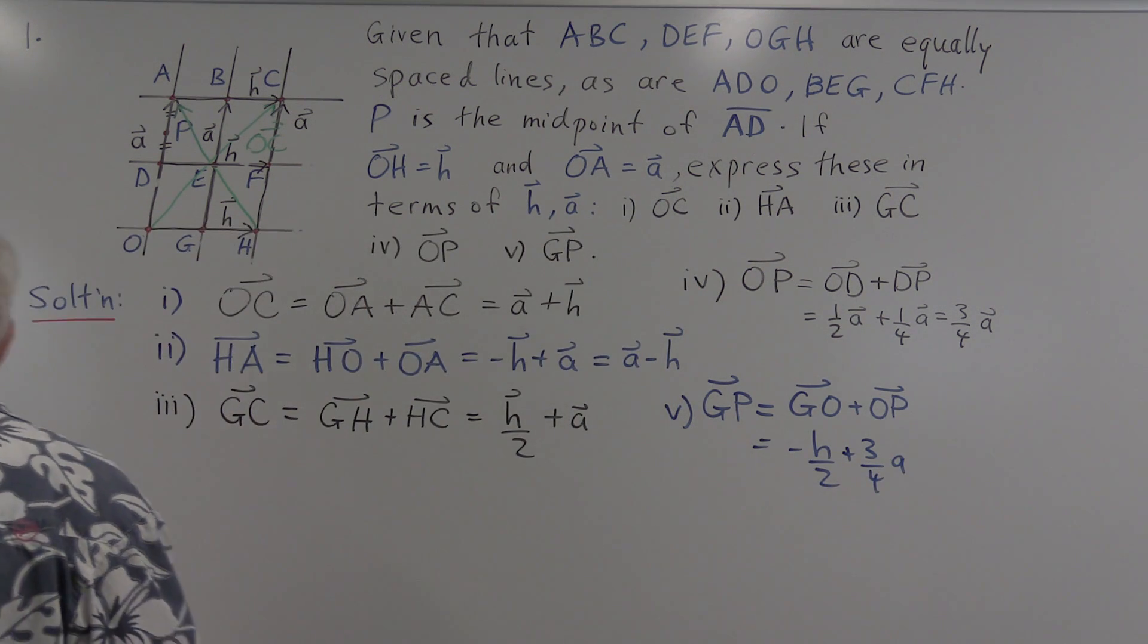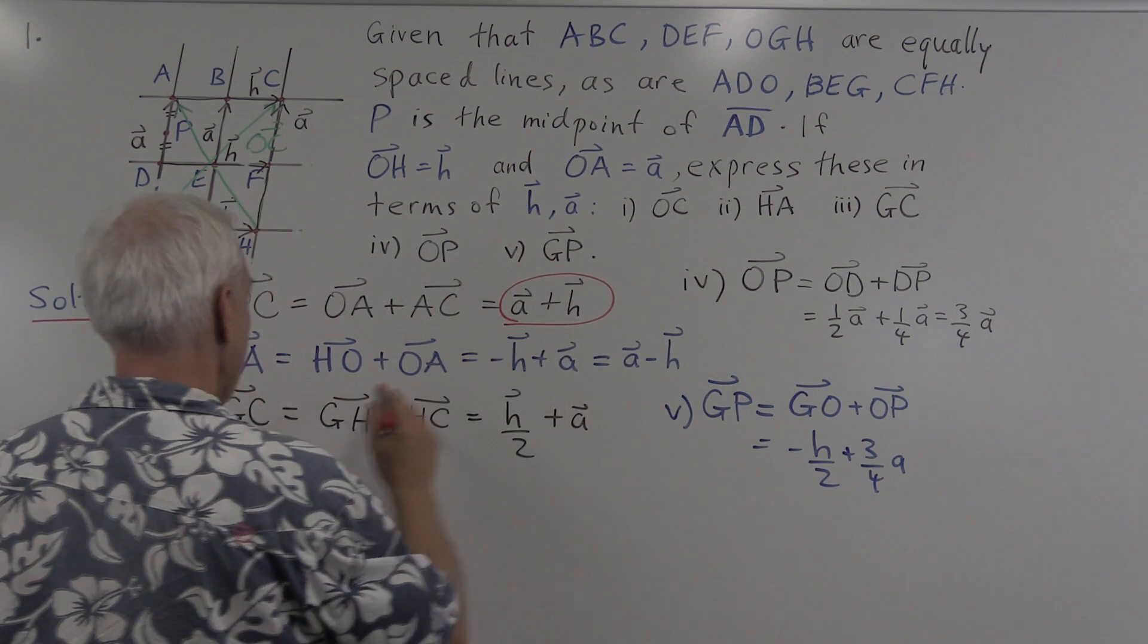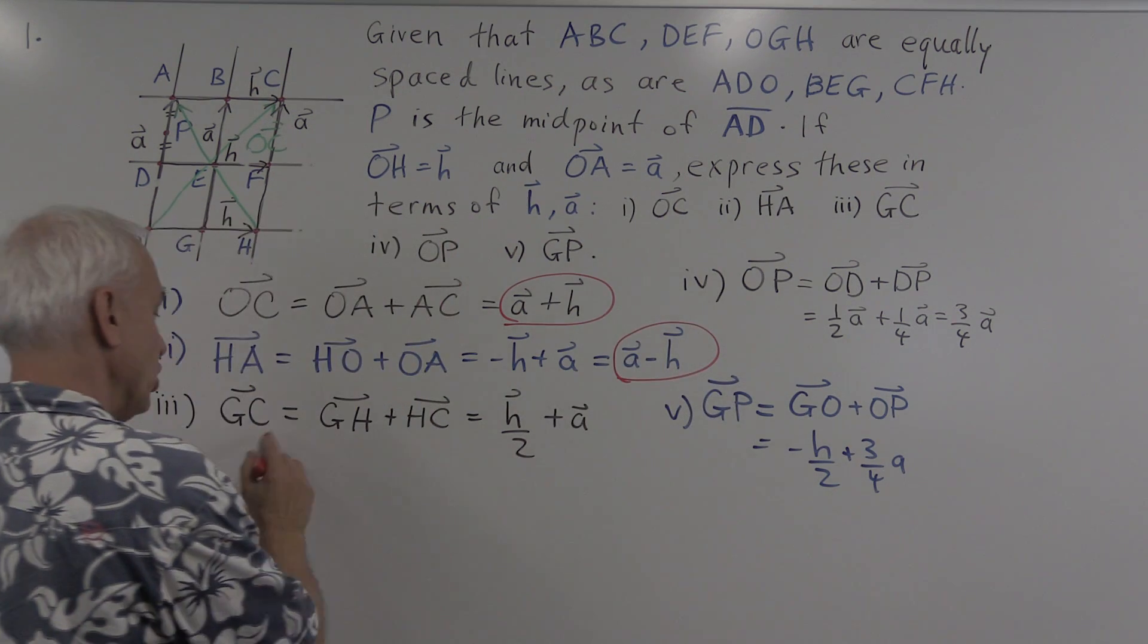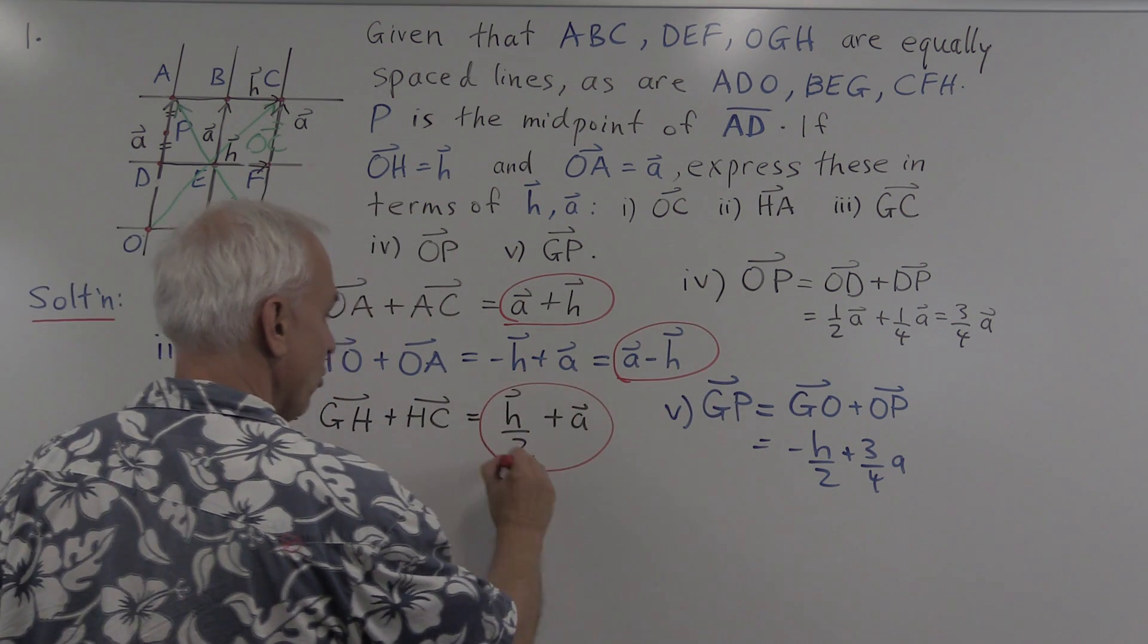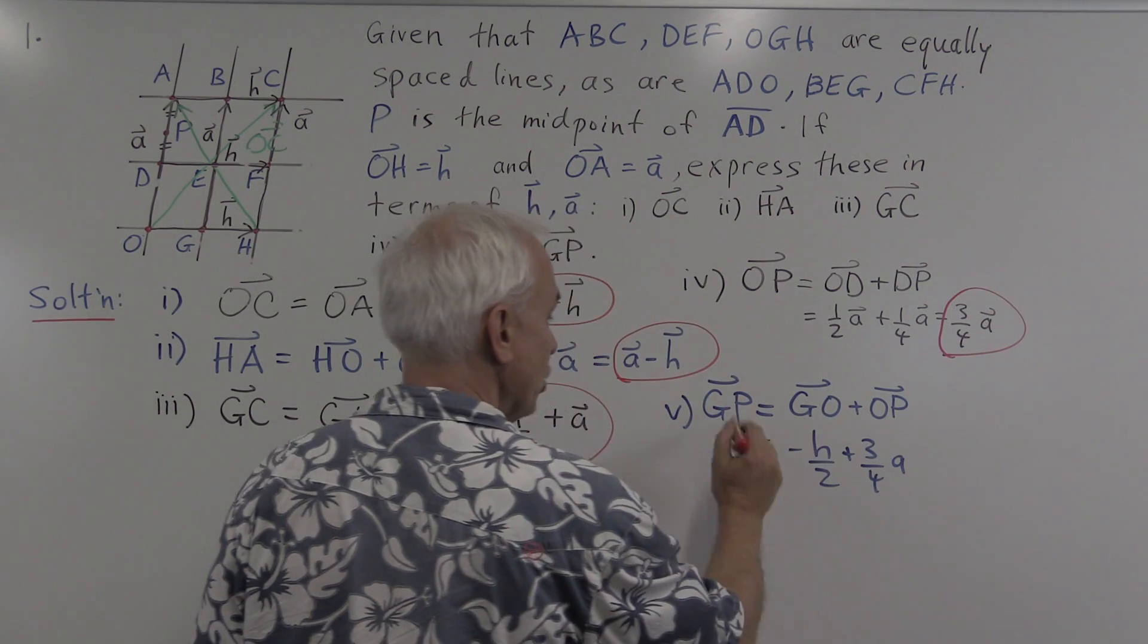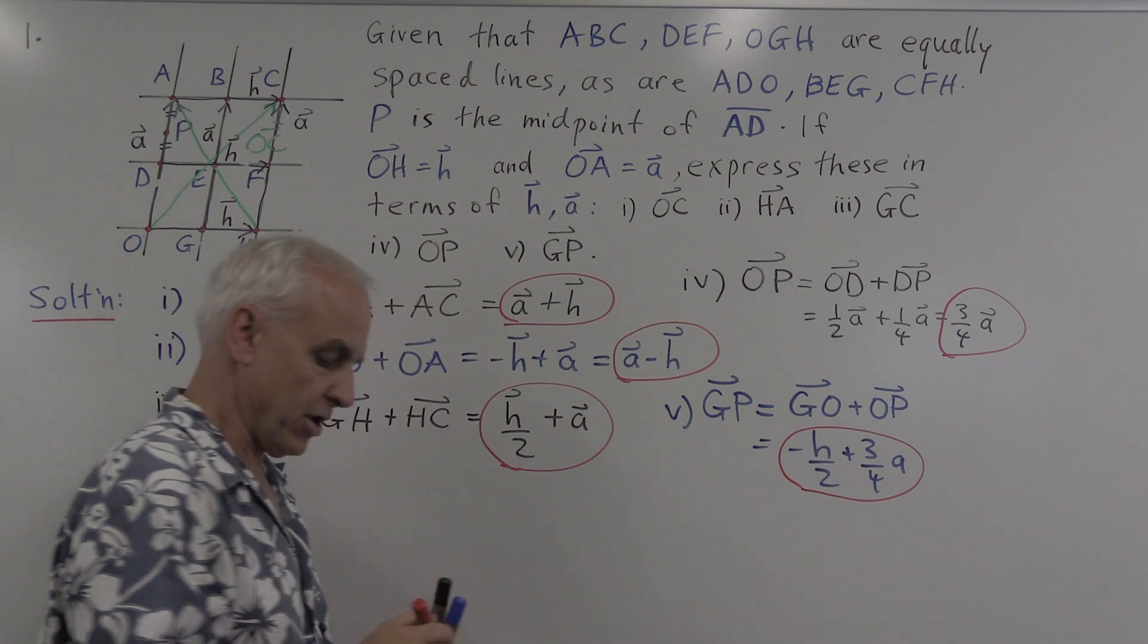So those are the various answers. We've got OC is equal to a plus h. We've got HA is equal to a minus h. We've got GC equals h over two plus a. OP is three-quarters of a. And GP is minus h over two plus three-quarters of a.